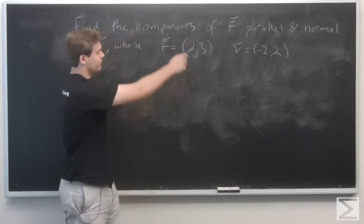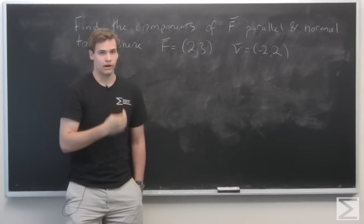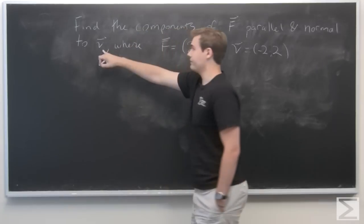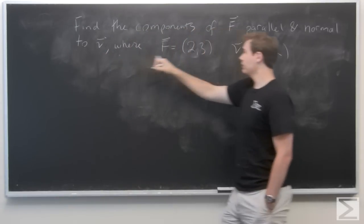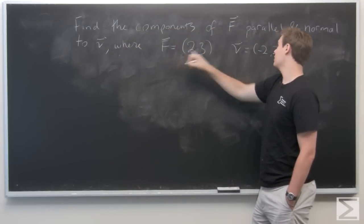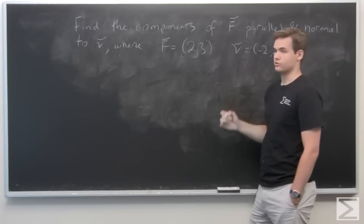So here we're given a vector f, and we want to find the parallel and normal components of f to this vector v, where f is the vector (2, 3) and v is the vector (-2, 2).